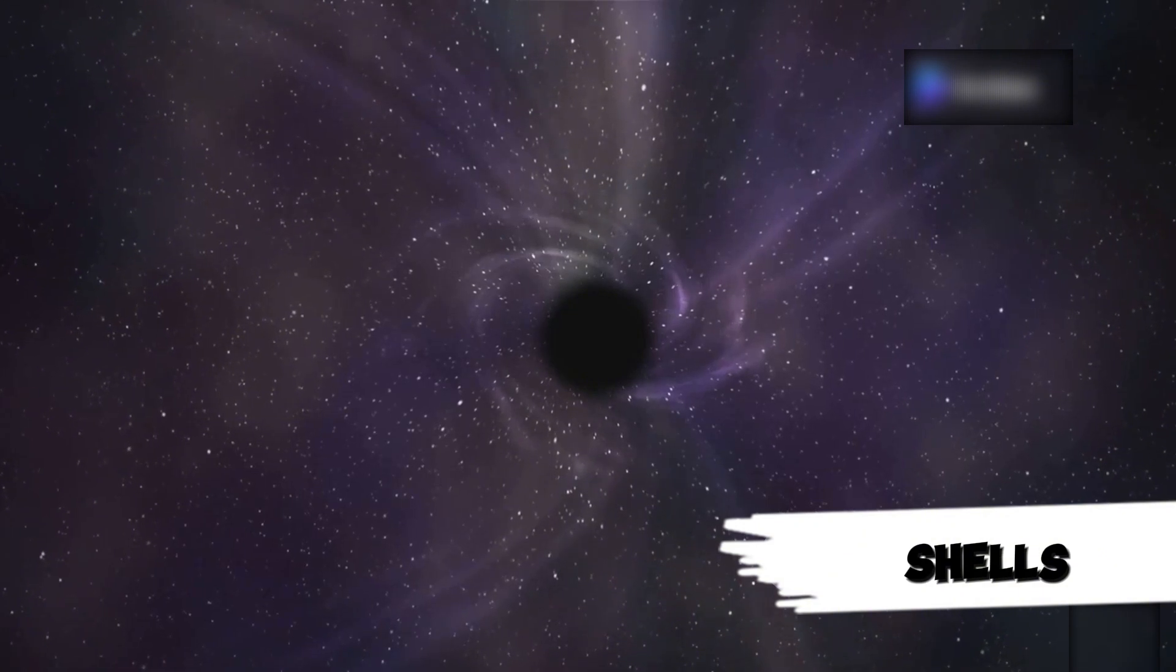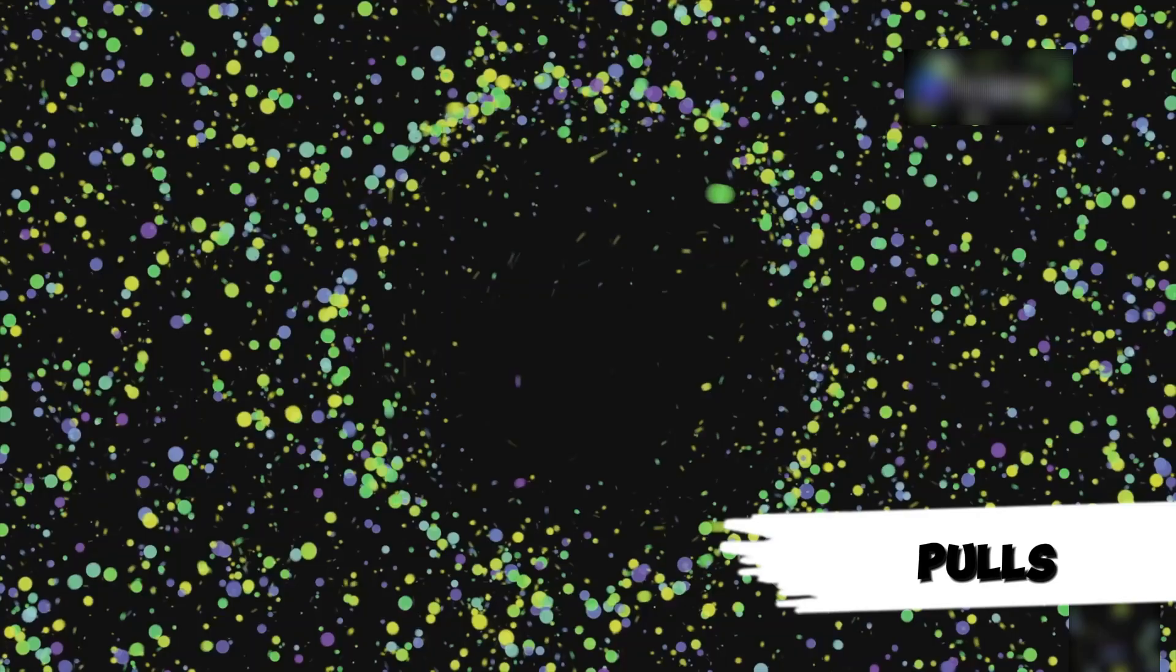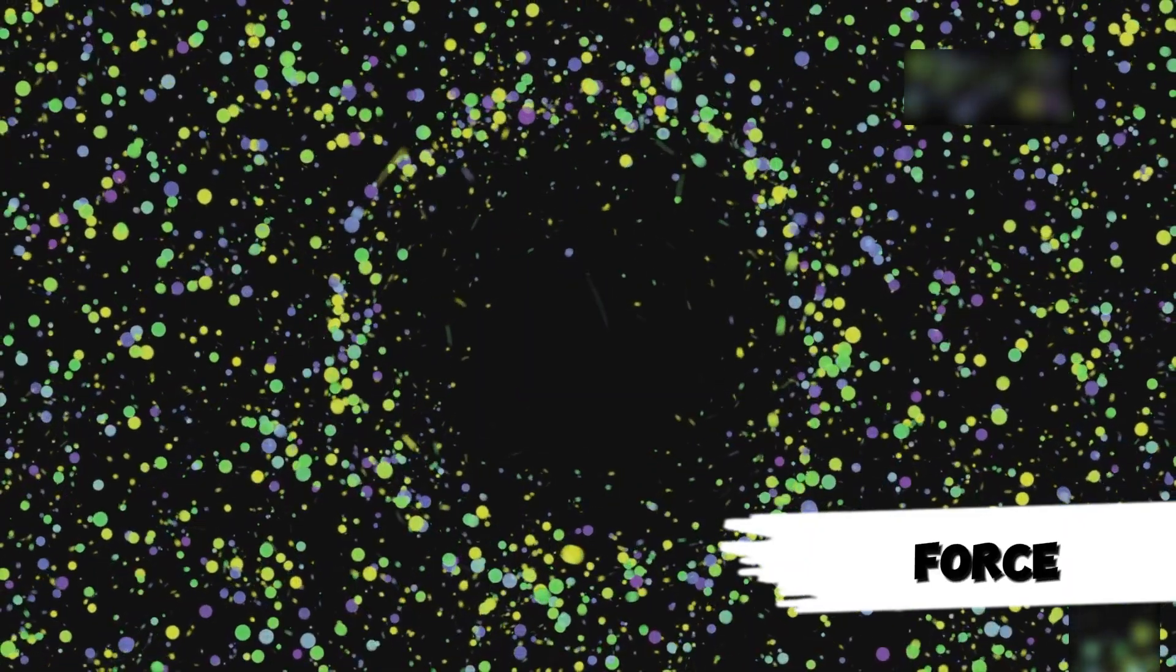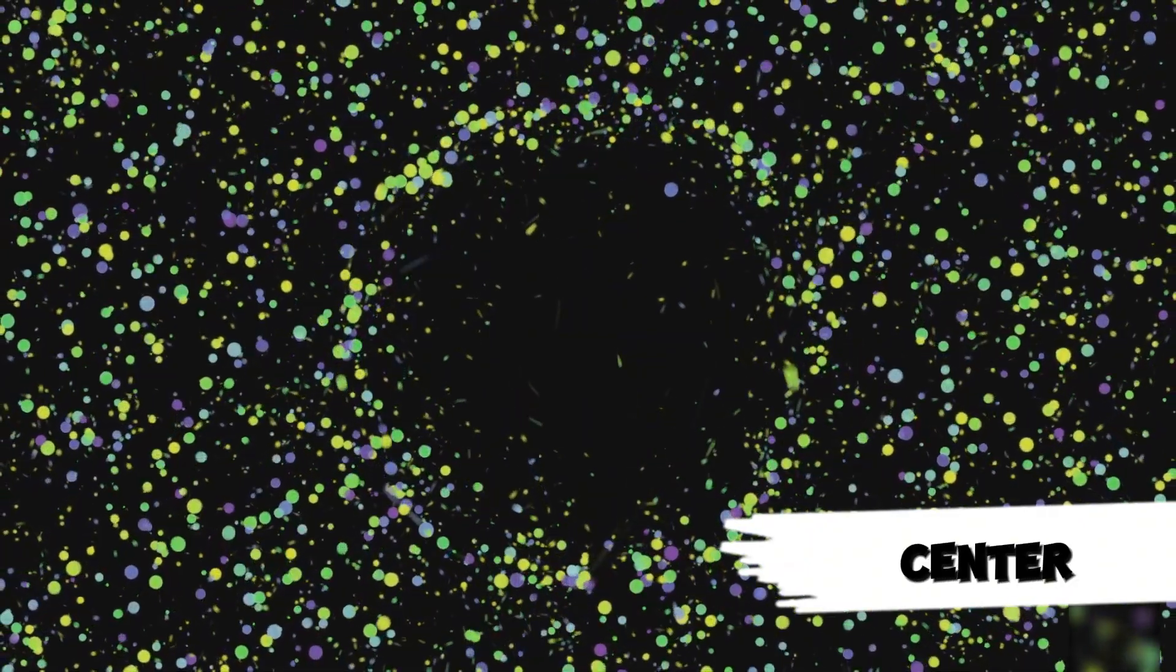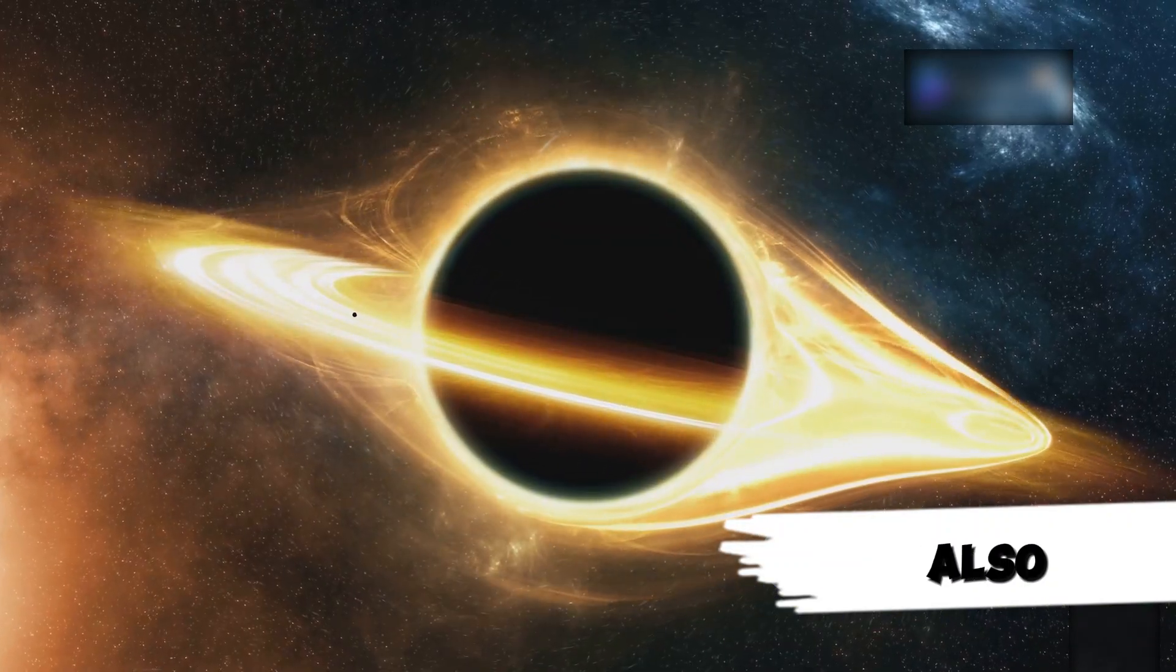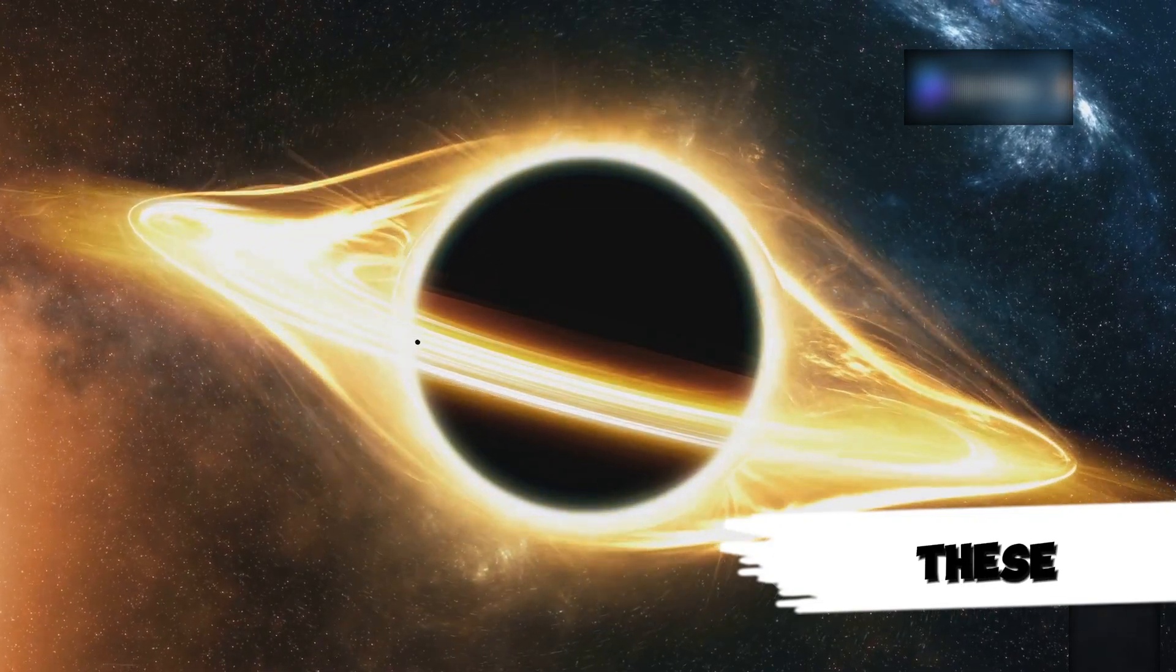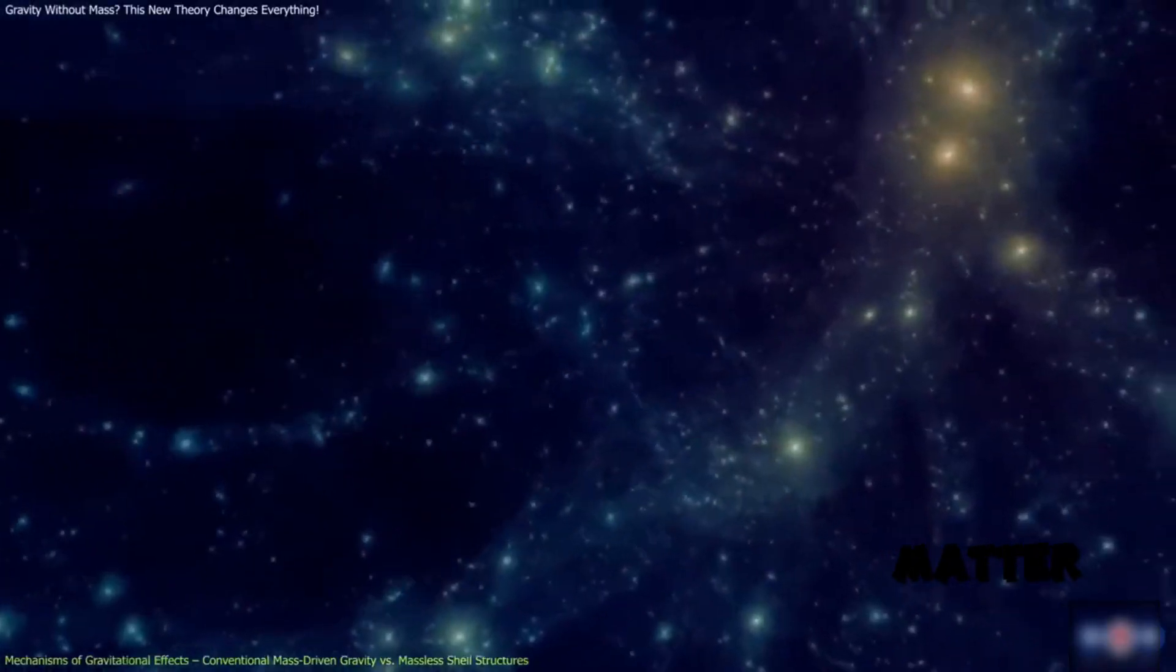Liu's massless shells offer a fresh perspective. These shells, despite their zero net mass, create gravitational poles. A star within such a shell feels a force drawing it toward the shell's center, mimicking the effects of conventional mass. Liu suggests this could also explain gravitational lensing, light bending as it passes through these shells, similar to effects attributed to dark matter.